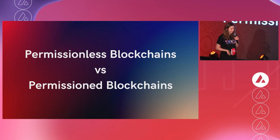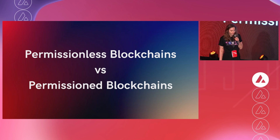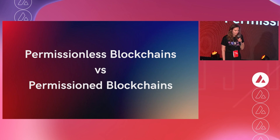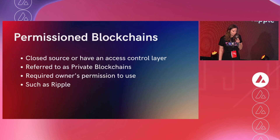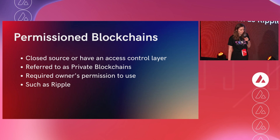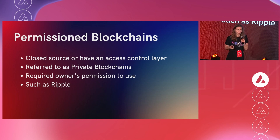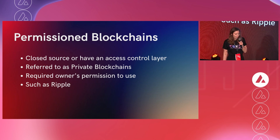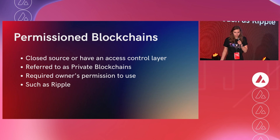Let's quickly talk about permissioned versus permissionless blockchains. At Hyperlane, we love to talk about permissionless interoperability, and I feel not many people understand what it means to have permissioned blockchains. A permissioned blockchain is pretty much closed source, and nobody can really contribute to it. Ripple is a great example of a permissioned blockchain, as well as any private blockchain — you need permissions in order to access it.